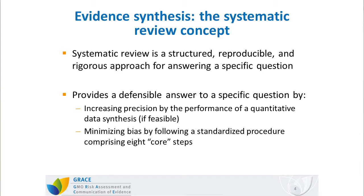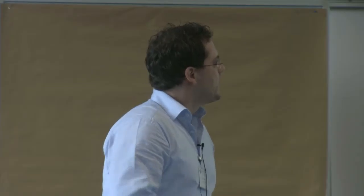Systematic reviews have the capacity to provide a defensible answer to a specific question in two ways. First, by increasing precision through the performance of a quantitative data synthesis if it is feasible based on the available data. Second, they minimize bias by following a standardized procedure which comprises eight so-called core steps.